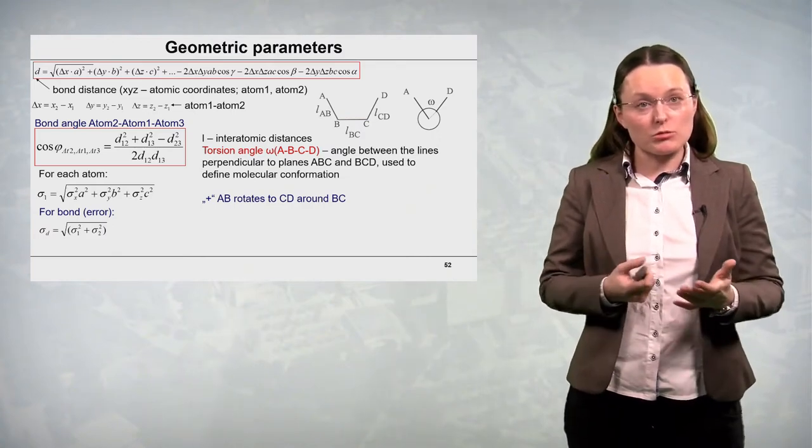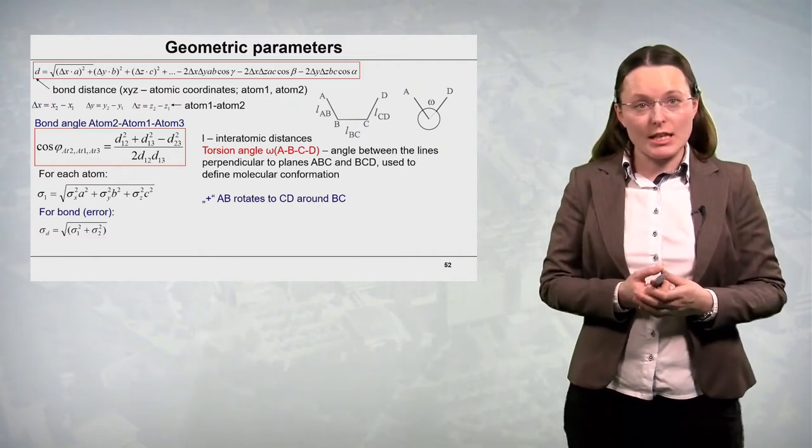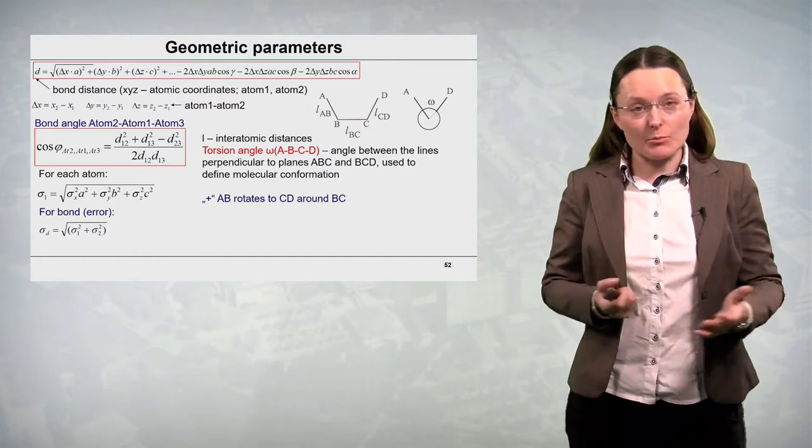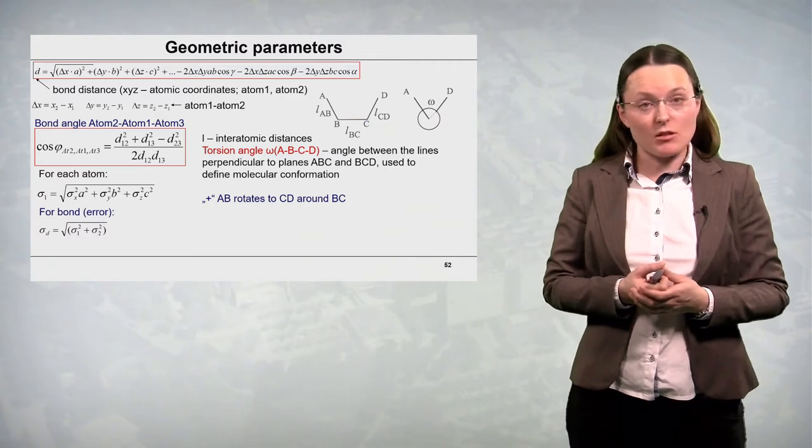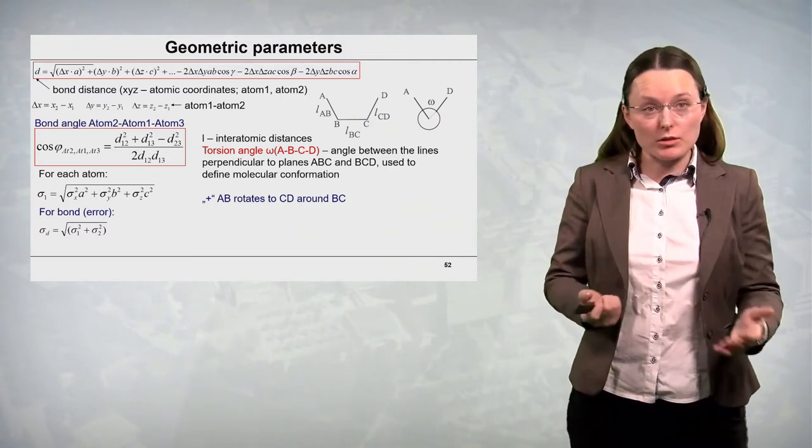It is important to realize that in this formula we also have the cell constants abc, alpha, beta, gamma. So the error of determination of these unit cell constants will affect the error of determination of the bond distances.